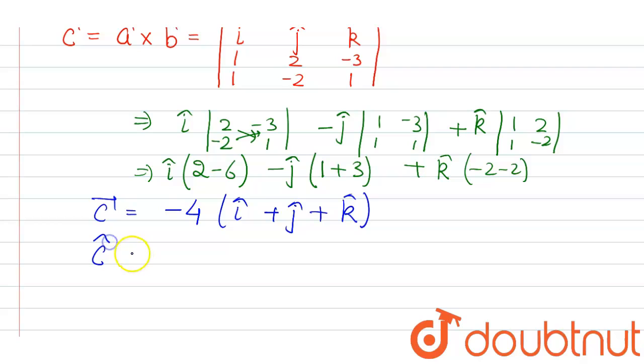But we have to find unit vector. So what we do, we divide the vector by its magnitude, that means minus 4 i cap plus j cap plus k cap divided by 4 root 3.